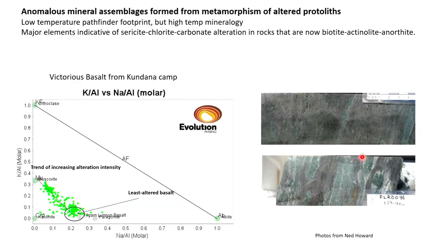When you look at the rocks themselves — and you should never believe geochemists who haven't looked at the rocks — if you looked at this data without ever seeing the rocks you'd say: look at that, that's a sericite alteration trend, all this data going straight towards muscovite, that's got to be chock-a-block with white micas. But when you go and look at it, the stuff that plots up near the muscovite node looks completely different — it's a mixture of biotite and a really really calcic plagioclase.